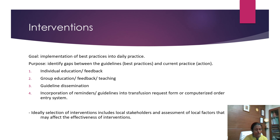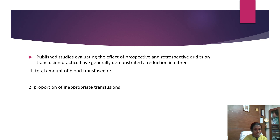Intervention strategies include individual education or feedback, group education feedback or teaching, guideline dissemination, and incorporation of reminders or guidelines into transfusion request forms or computerized forms. Ideally, selection of interventions includes local stakeholders and assessment of local factors that may affect the effectiveness of interventions. Published studies evaluating prospective and retrospective audits on transfusion practice have generally demonstrated a reduction in either total amount of blood transfused or proportion of inappropriate transfusions.